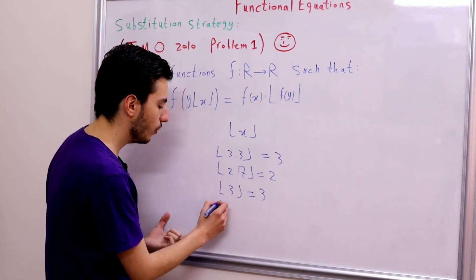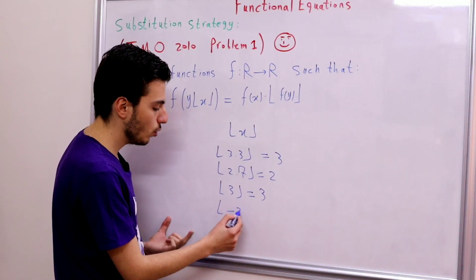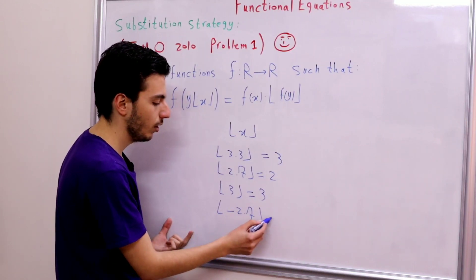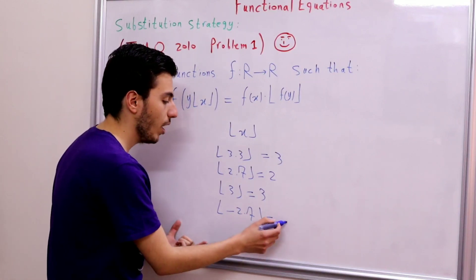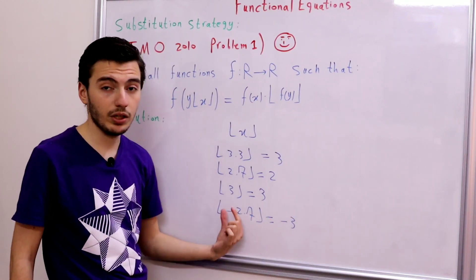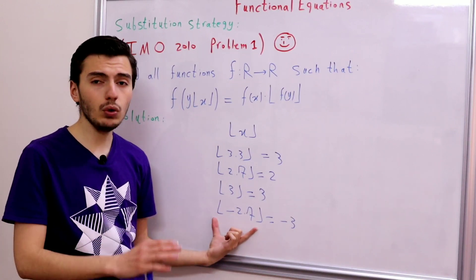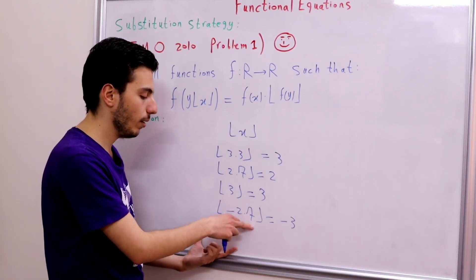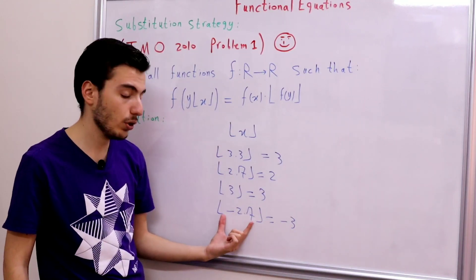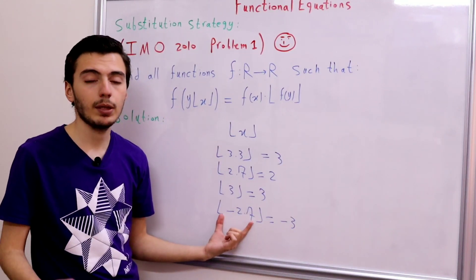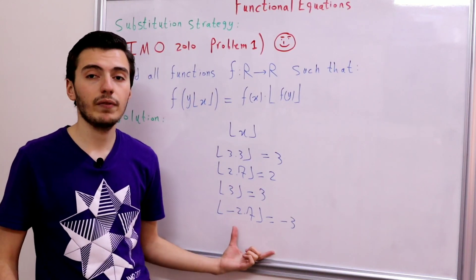But what about the floor of negative values? The floor of −2.7 is −3, not −2, because the floor function must always be less than or equal to the number inside. Since −3 is less than −2.7 but −2 is greater than −2.7, the correct answer is −3.